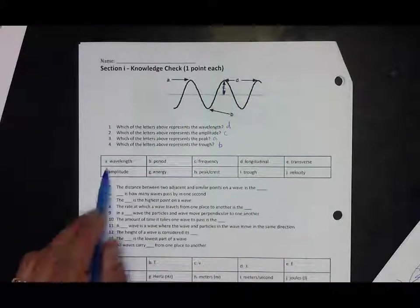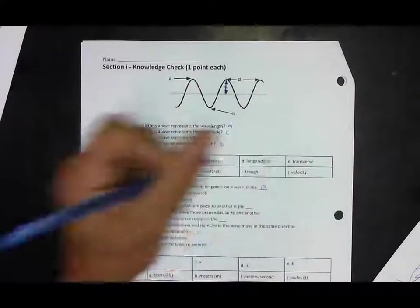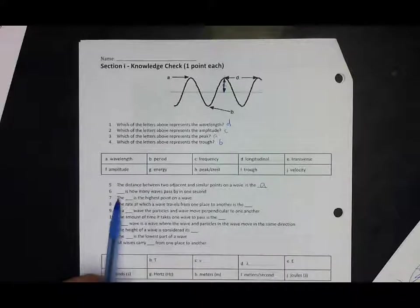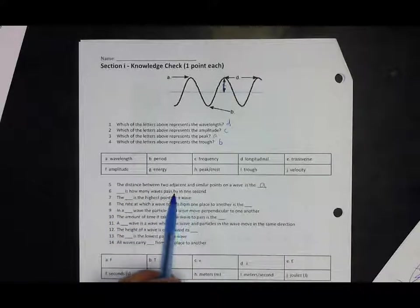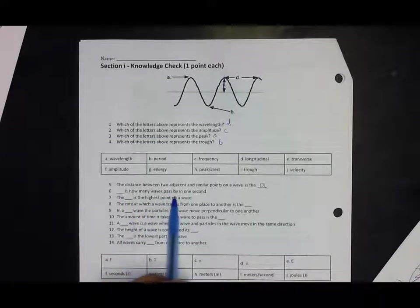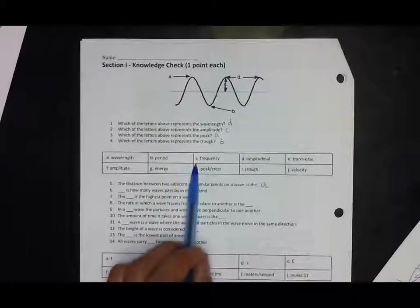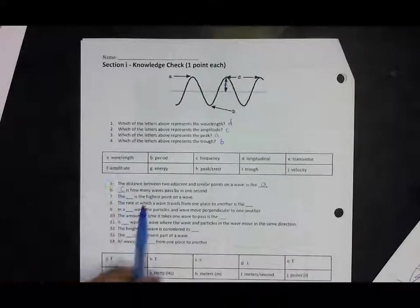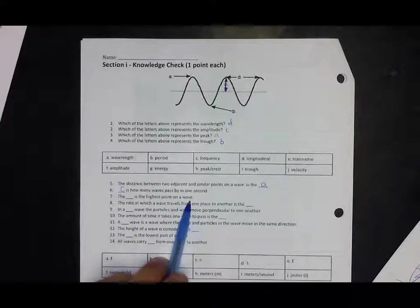The distance between two adjacent or similar points on a wave, that's the distance between two points, is wavelength. How many waves pass by in one second? That's actually frequency, so that's how fast you're oscillating back and forth.